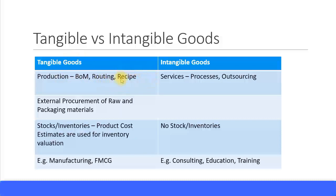Tangible goods usually have a bill of materials and a routing; combined, these give you a recipe, so it's more of a production environment. Intangible goods involve services — processes, outsourcing activities — it's all about activities and services. For tangible goods, you externally procure raw materials and packaging materials to produce your finished goods.